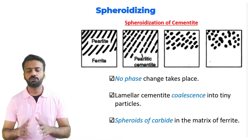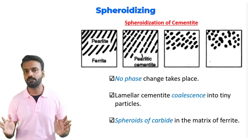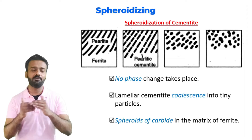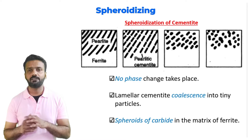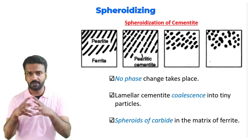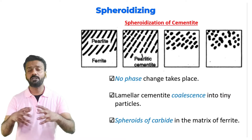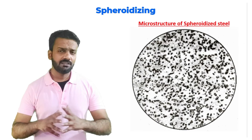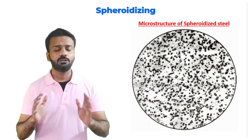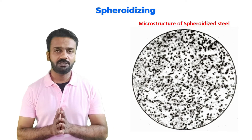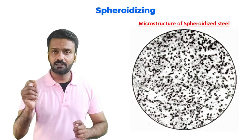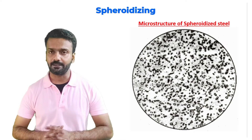Here you can see images of spheroidization of cementite. There is no phase change — the lamellar cementite coalesces together to form spheroid particles in the matrix of ferrite. This is the microstructure of spheroidized steel: the white phase is the ferrite phase, and the small black spheroids are cementite.